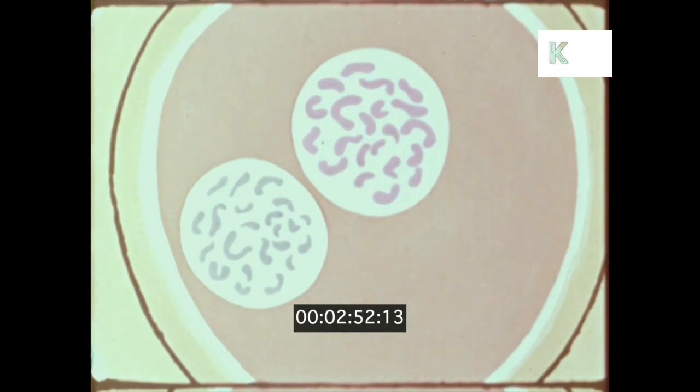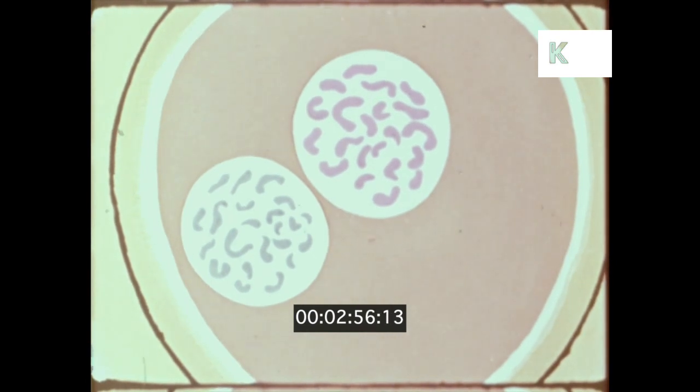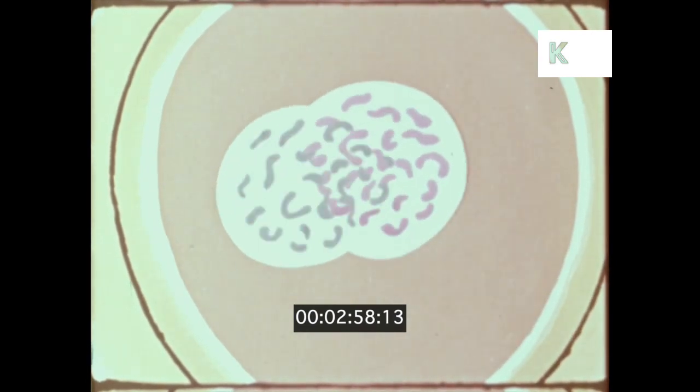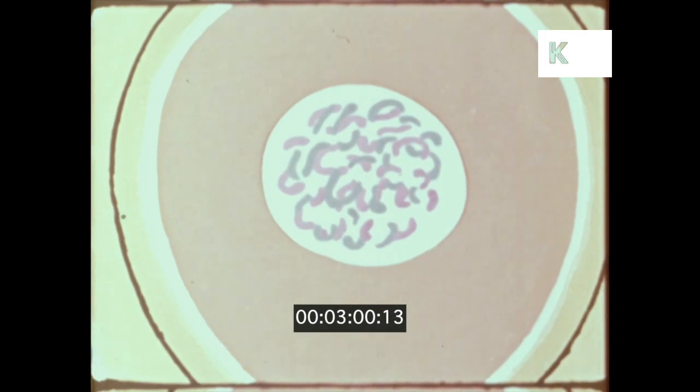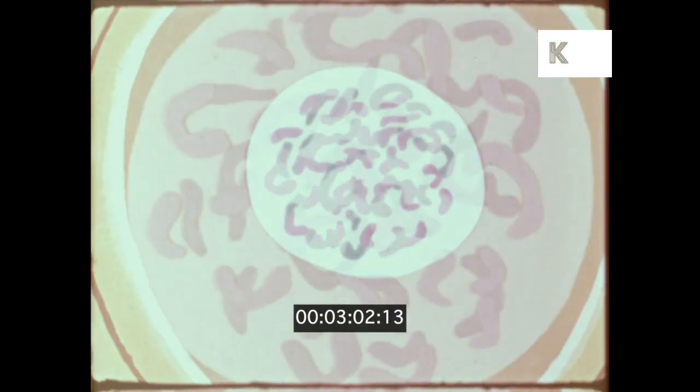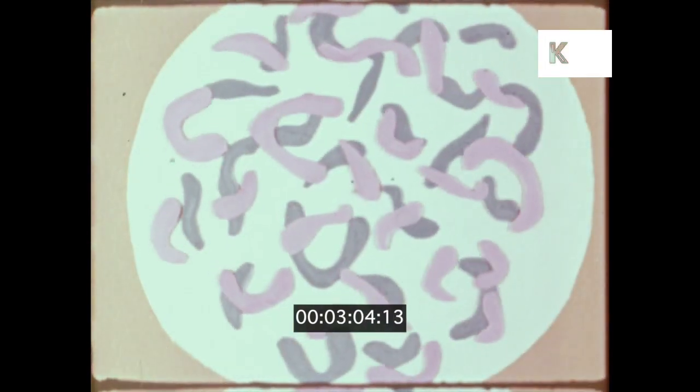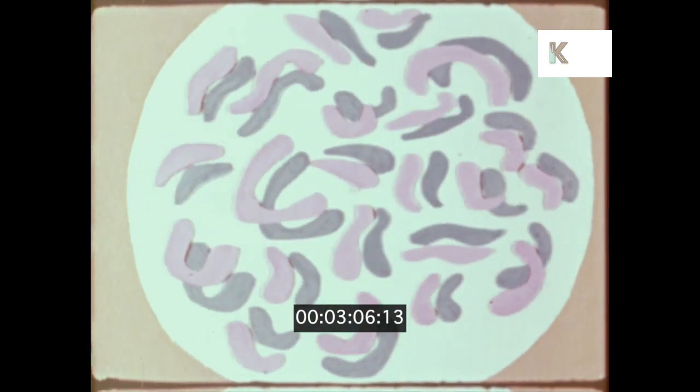When the egg is fertilized, its chromosomes and the chromosomes from the sperm come together. Each chromosome from the father is matched by one from the mother. These 23 matched pairs of chromosomes determine our physical appearance and our sex.